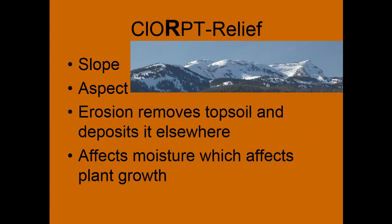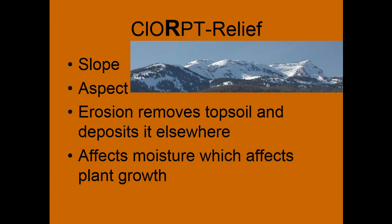Relief: so both the slope, the degree of slope, as well as the aspect — so aspect is if it's north, south, east, west — and this can influence a lot of our other climate factors. So erosion, removing topsoil, also affects moisture and sunlight.